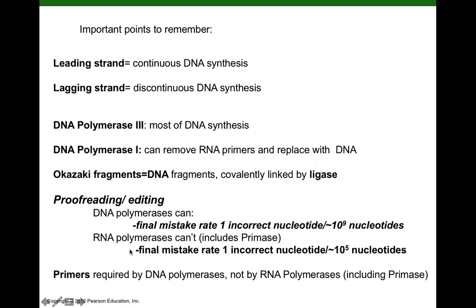In contrast, RNA polymerases don't proofread, and for that reason they don't require a primer — they can just land on the single strand DNA template and start synthesizing complementary RNA. Now, we want to remember that RNA viruses — RNA viruses like influenza virus and, oh my gosh, coronavirus — these RNA viruses use RNA polymerases to copy their viral RNA, their genetic information.